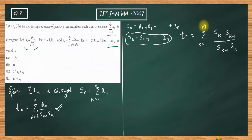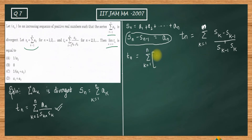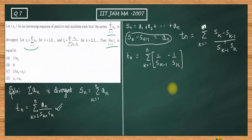So tₙ equals the summation from k=2 to n of (1/sₖ₋₁ - 1/sₖ). We have used the identity to reduce tₙ to this telescoping form.